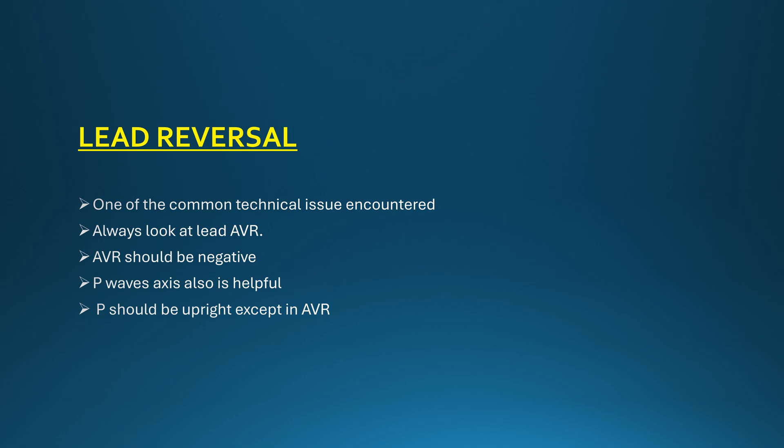Summarizing the findings for lead reversal, one should look at at least two factors. First, the aVR lead must be negative in sinus rhythm — the P wave, QRS, and T wave all have to be negative in aVR. Second, assess the P wave vector in the other leads. If the P wave is inverted in the limb leads, always think of lead reversal. Combining these two factors gives a high likelihood that this is a lead reversal.